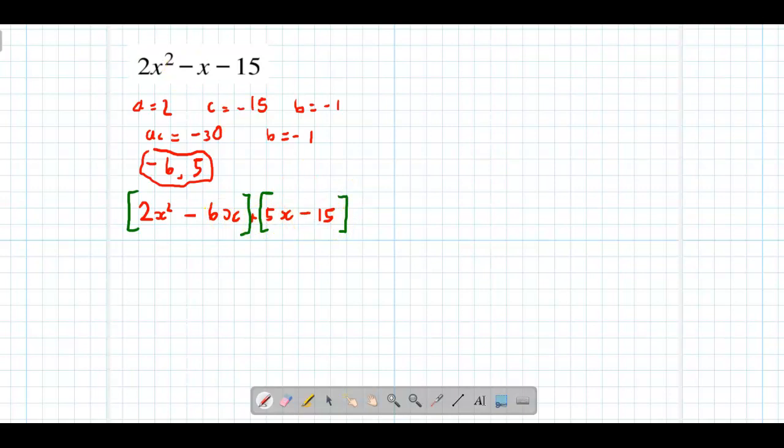When we group them, the first group has 2x² and 6x, so the common factor is 2x, leaving x - 3. The second group has 5x and -15, so the common factor is 5, also leaving x - 3. These two brackets are exactly the same.